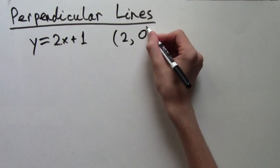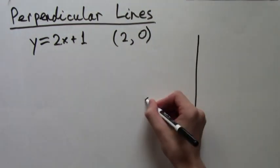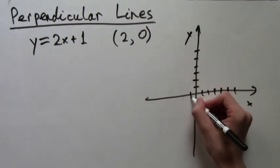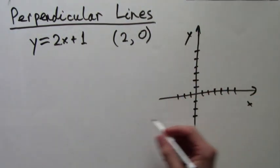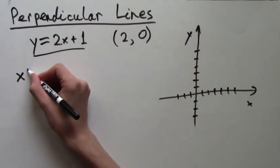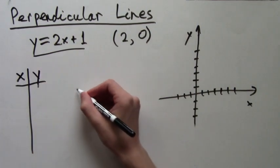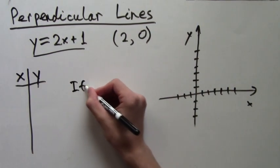So before we find the perpendicular line, let's graph what we have. We will start by making a table of values of x and their corresponding y values. Remember, we are doing this so that we have two points that we can graph our line with.